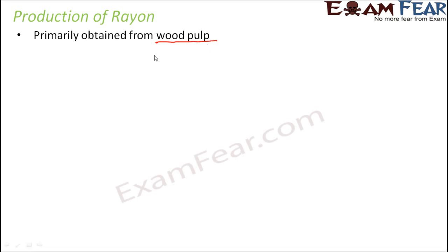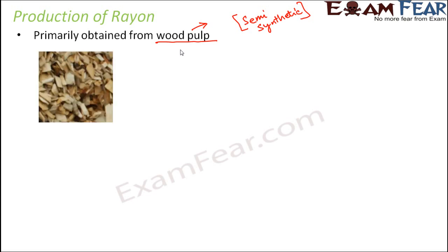Rayon is primarily obtained from wood pulp, which is a plant source — something that naturally exists in nature. Since rayon is prepared from a naturally occurring material, it is also known as a semi-synthetic fiber. The raw material needed for producing rayon is wood pulp, a natural thing, and since it is obtained from a naturally occurring polymer, it is called semi-synthetic.